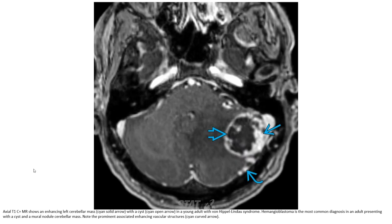On axial T1C+, an enhancing leptomeningeal mass is shown in a young adult with Von Hippel-Lindau syndrome. Hemangioblastoma is the most common diagnosis in adults presenting with a cyst and mural nodule. Note the prominent associated flow voids representing the vascular structure.